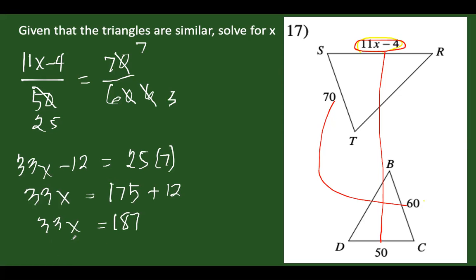Dividing both sides by 33, we get x equals 187 over 33. We can simplify this by 11 — 187 divided by 11 is 17, and 33 divided by 11 is 3.